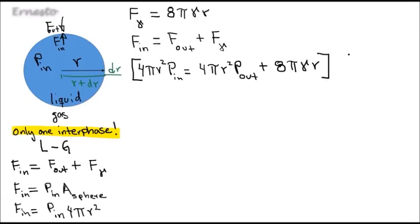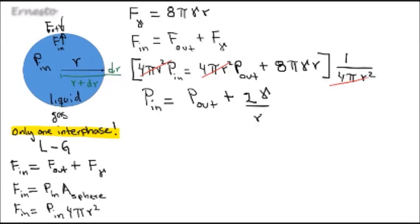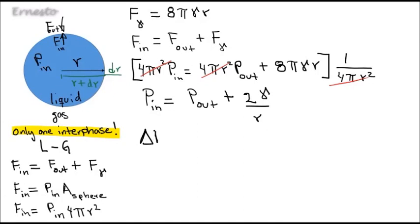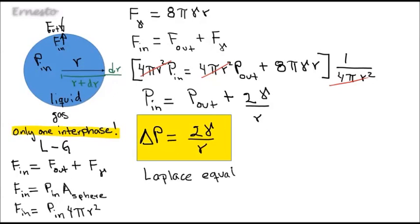We can cancel some factors by multiplying both sides of the equation by the same factor. And we finally obtain this expression that we can also write in the following way.